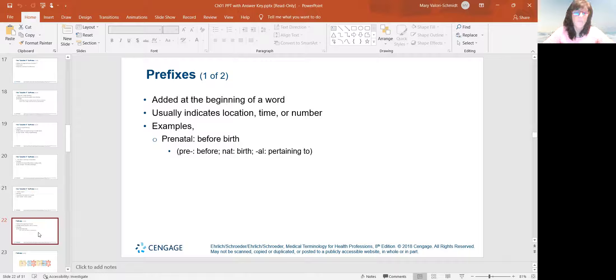And then prefixes. They're put at the beginning of the words and they usually talk about either the location of something, a time or a number. So like pre, pre and post and peri. Pre means before. So if I say prenatal, it means before birth because natal is birth and al is pertaining to prenatal, before birth.